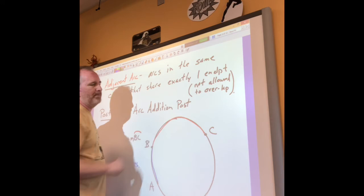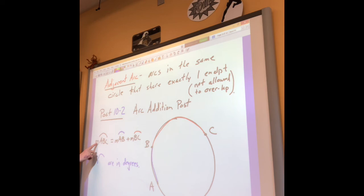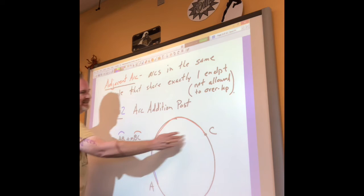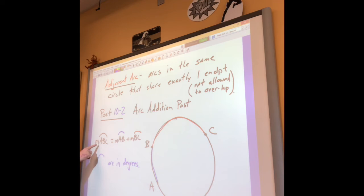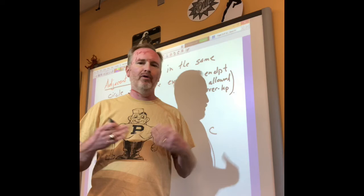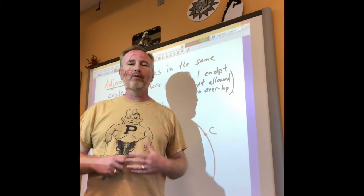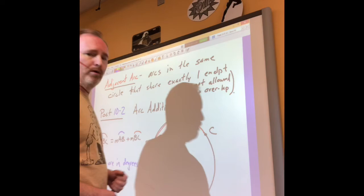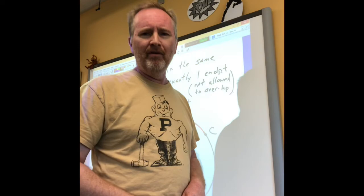This is Postulate 10-2, one of my favorites: the Arc Addition Postulate. It says the measure of arc ABC equals the measure of arc AB plus the measure of arc BC. So if you add two adjacent arcs together, you get the measure of the whole combined arc. The measure of arcs is always given in degrees - degrees are something we talk about in geometry class, not at Home Depot where you'd use inches, centimeters, or feet.